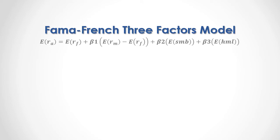As a formula, the expected asset return equals the expected risk-free rate of return, plus a beta 1 coefficient multiplied by the difference between the expected market return minus the expected risk-free rate of return, plus a beta 2 coefficient multiplied by the expected small minus big portfolio return, plus a beta 3 coefficient multiplied by the expected high minus low portfolio return.